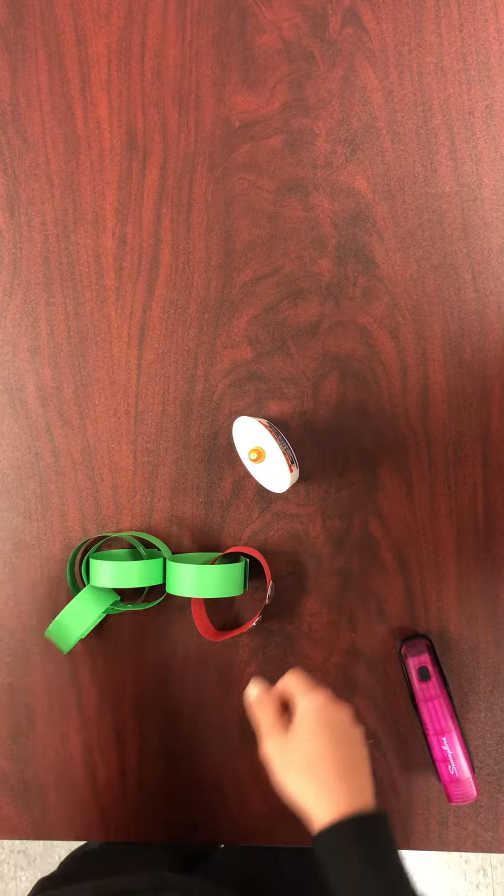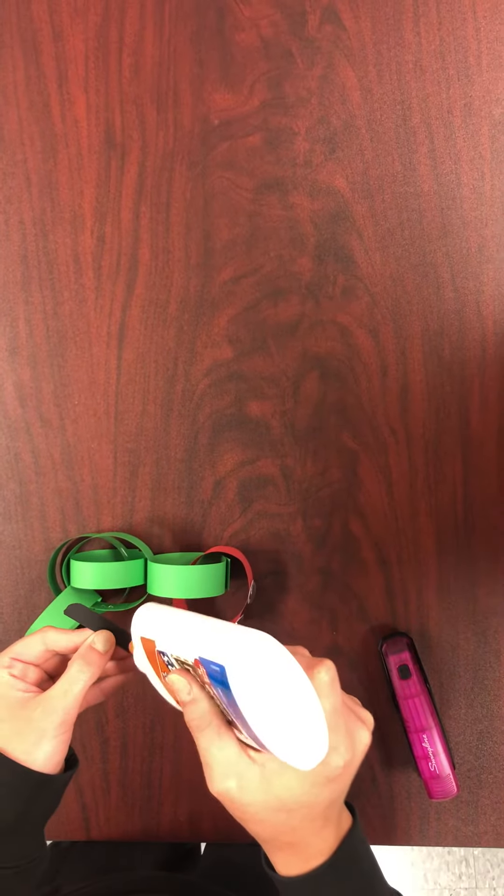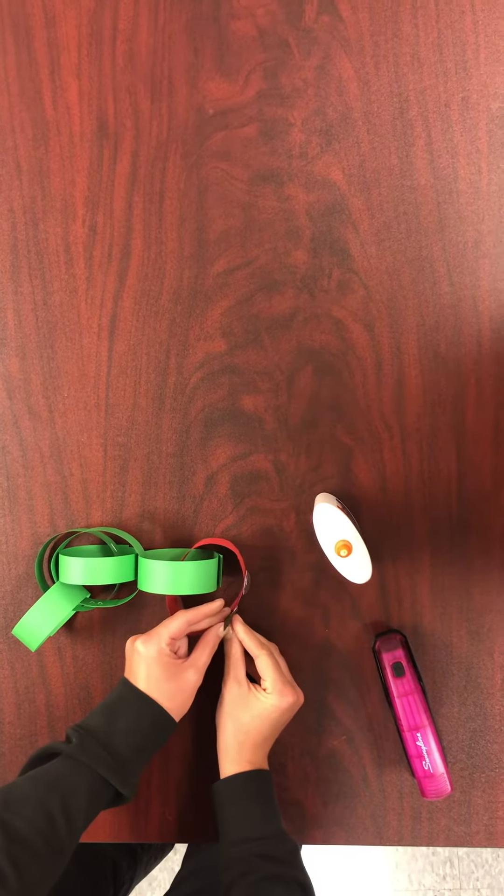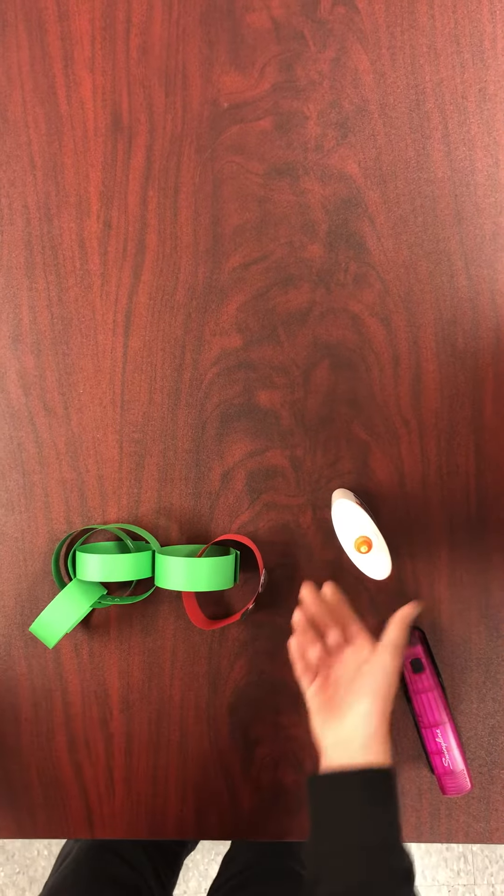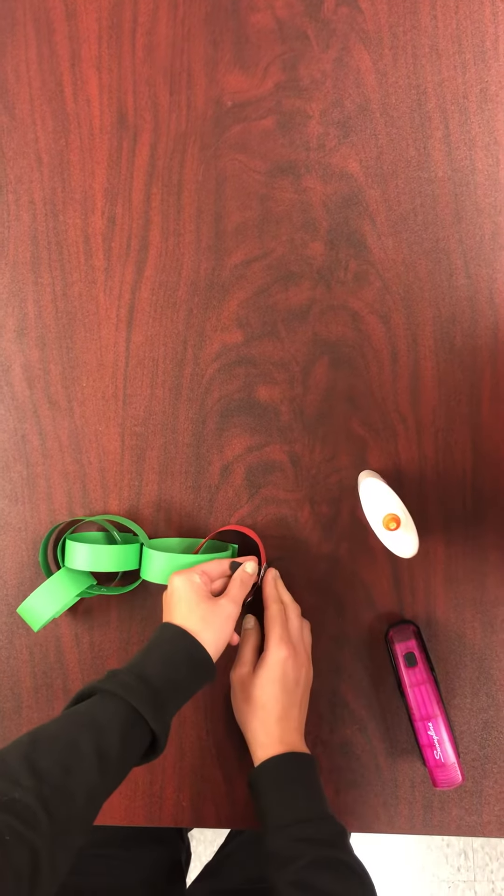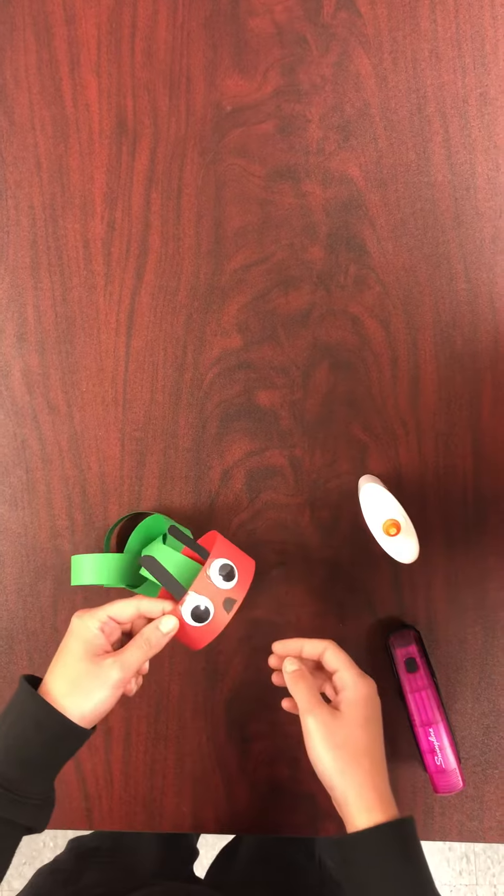Next, take your black tiny strips and put a tiny amount of glue on the back, then stick them above the eye. So it will look like that.